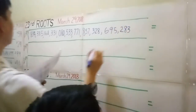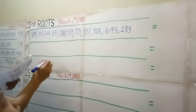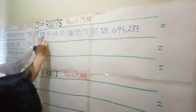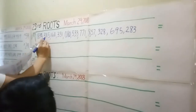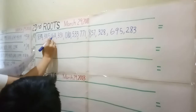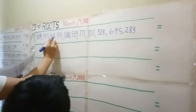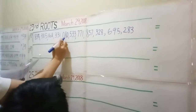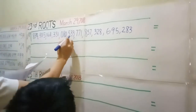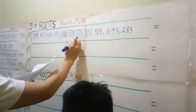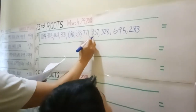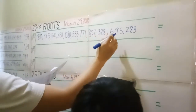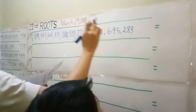What's the 23rd root of 834 million, 385 billion, 168 trillion, 331.60 Tyler, 858 million, 533 million, 771.80 — three hundred twenty-eight million, six hundred ninety-five thousand, one hundred eighty-three?